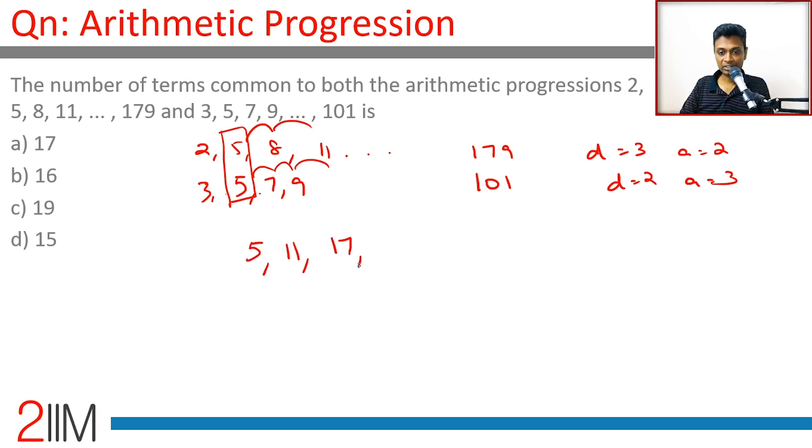Each number is a multiple of 6 minus 1: 12 minus 1, 18 minus 1, 24 minus 1. So 96 minus 1 equals 95 will be a part of it. 102 minus 1 equals 101 will be a part of the sequence. Luckily enough, it stops with 101.